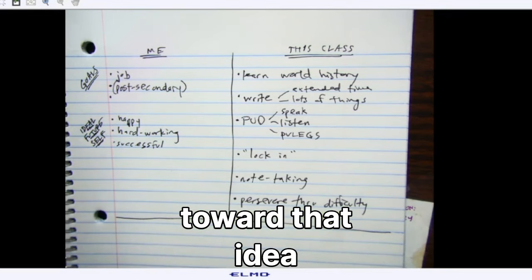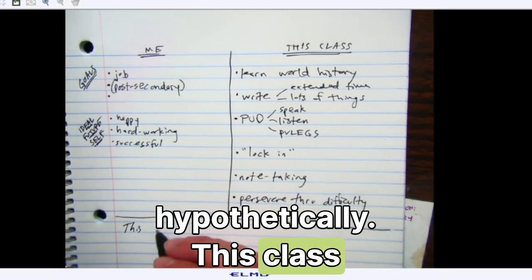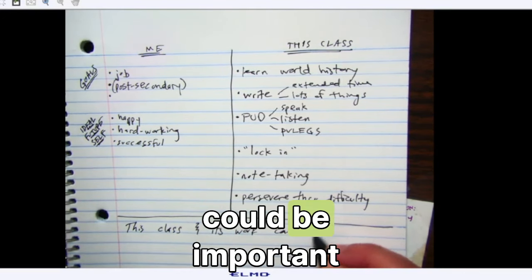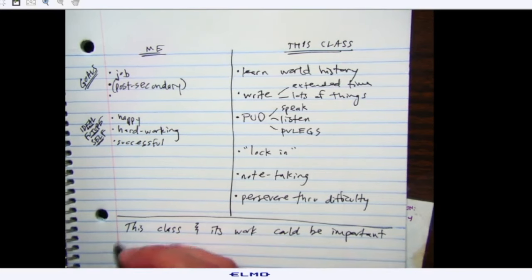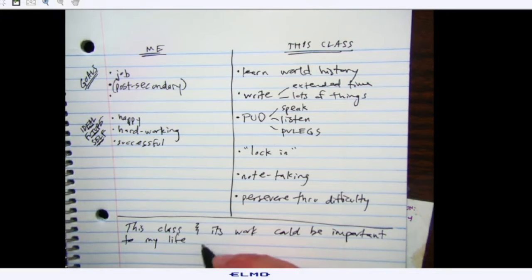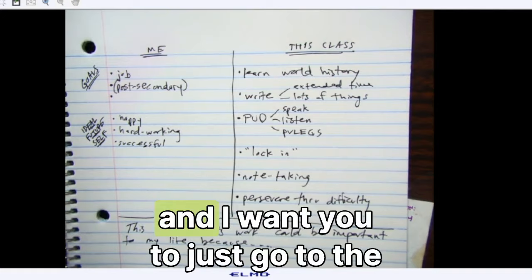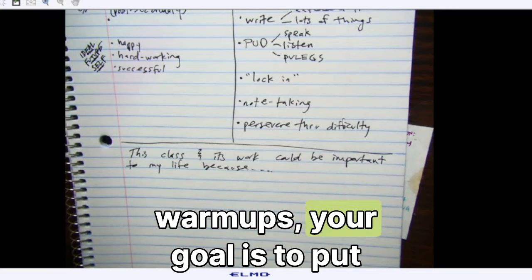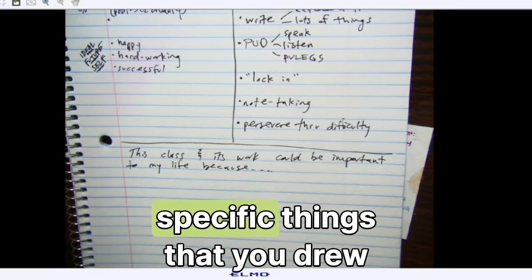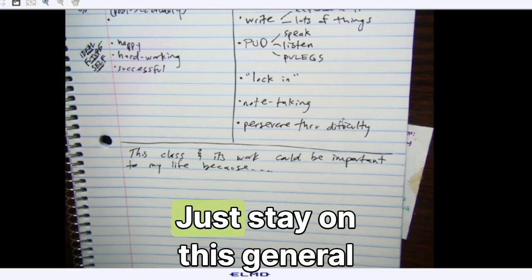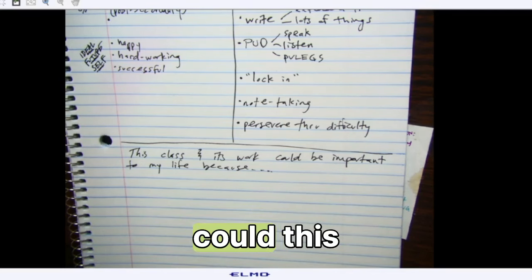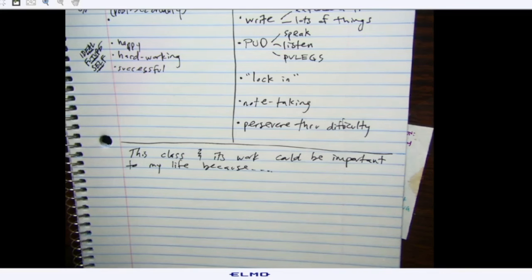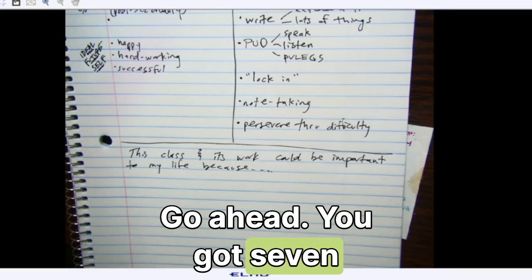So I want you to write toward that idea. And we're just going to speak hypothetically. So this class, and its work, could be important to my life, to what you actually want. Because... And I want you to just go to the races for seven minutes and write as much as you can about that. Just like our warm-ups, your goal is to put words on the page. You can describe specific things that you drew arrows to. Just stay on this general topic. How the heck could this stuff I'm having you do matter for this? Only you can answer that question. Go ahead. You've got seven minutes to push.